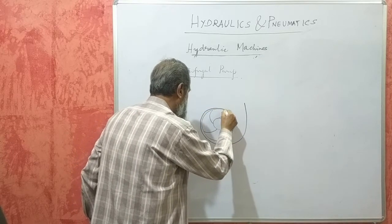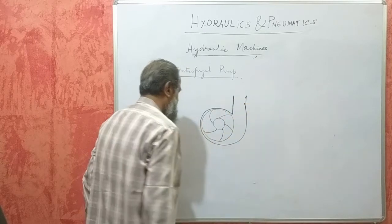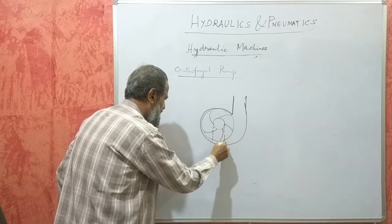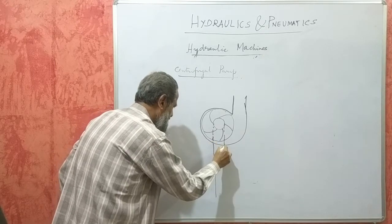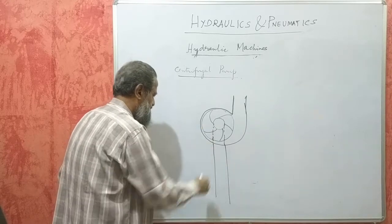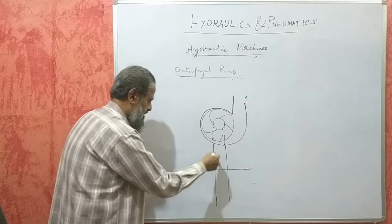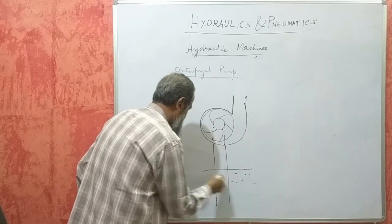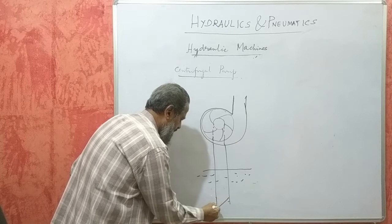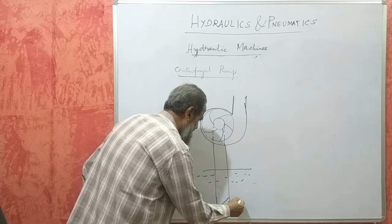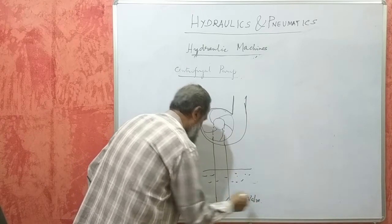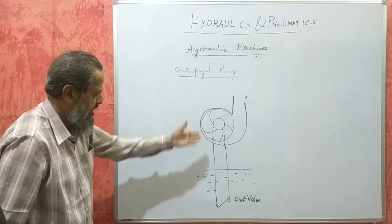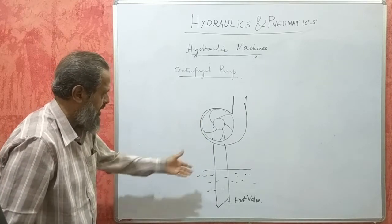You get different types of casings — volute casings, vortex casings, etc. There is a pipe called the suction pipe, which is inside the sump or tank or well. At the bottom there is a non-return valve called the foot valve. It is a non-return valve — it allows liquid to flow in one direction only, that is upward, and does not allow liquid to move downward.